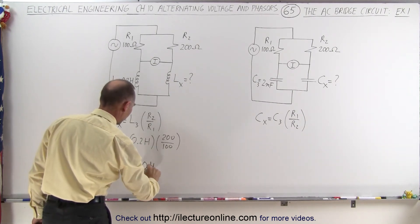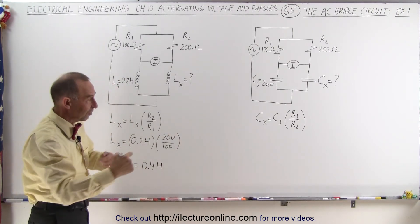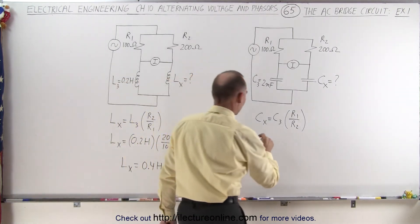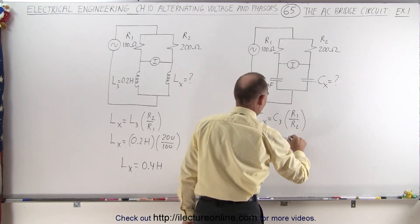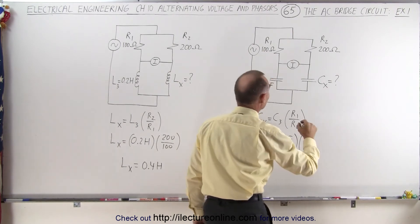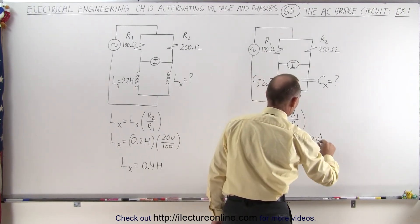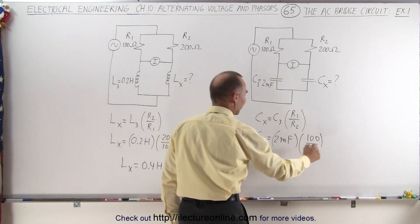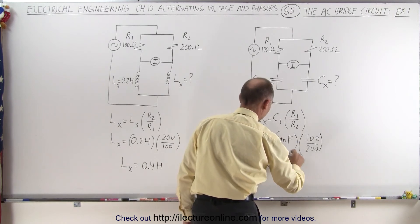When it comes to capacitors, the only difference is the ratio of the resistors, so the unknown C sub X is equal to the known capacitor, 2 millifarads, multiplied times the ratio of R1 over R2. And there you can see that the unknown capacitor is half the known capacitor, so therefore C sub X is equal to 1 millifarad.